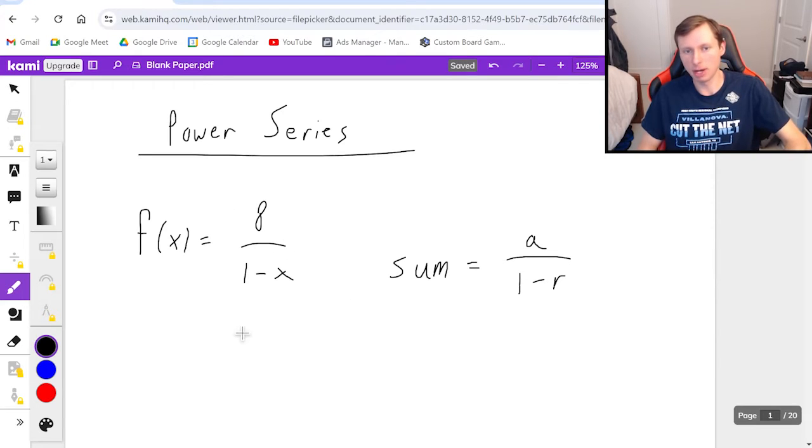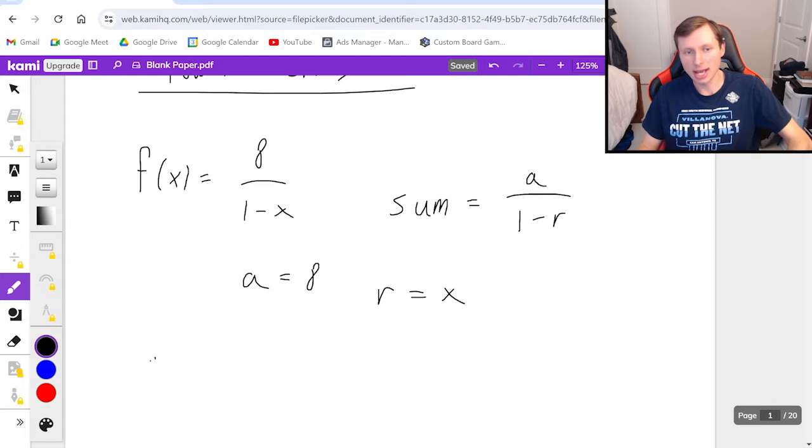So in other words, in this problem, a equals 8 and r would just be x. And so therefore you can actually write it as a geometric series, which hopefully we remember how to write. It's a times r to the n minus 1, assuming the series starts at n equals 1.